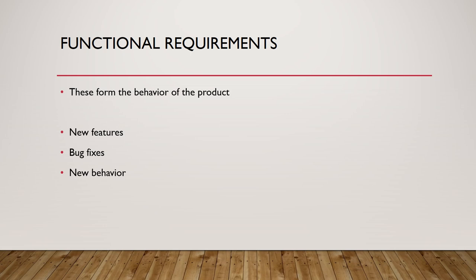Let's say you have a product already out in the market — product 1.0 — and your next project is to work on product 2.0. Functional requirements would cover what new features are in that product, what bugs from product 1.0 are being fixed, and what new behavior is being built in. What requirements are altering the existing behavior and including new behavior in product 2.0? These are functional requirements — they tell you how the product of this project is going to behave.